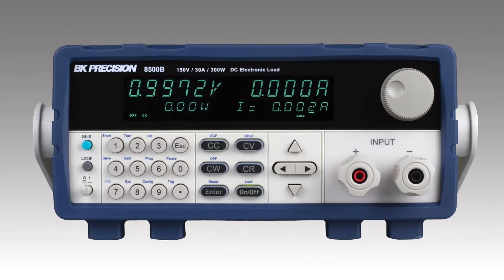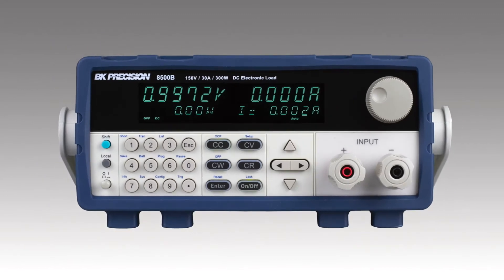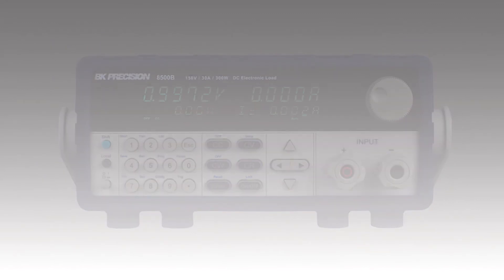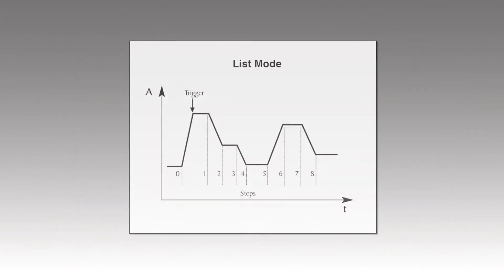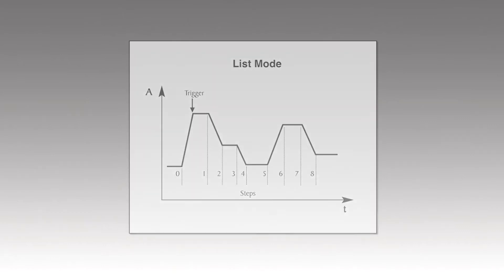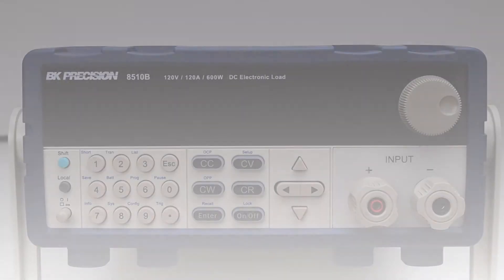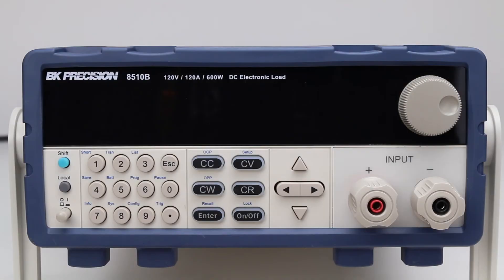The 8500B series programmable DC electronic loads are capable of generating more complex load sequences in list mode. In this example, we will configure and run a simple list program directly from the front panel.